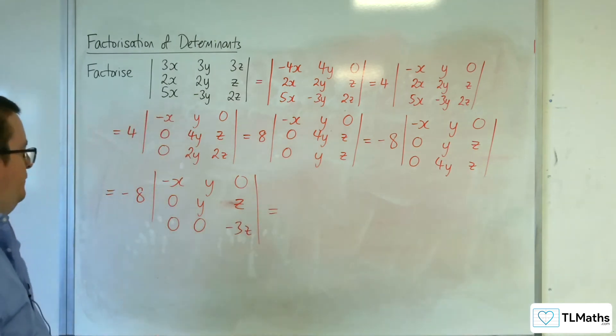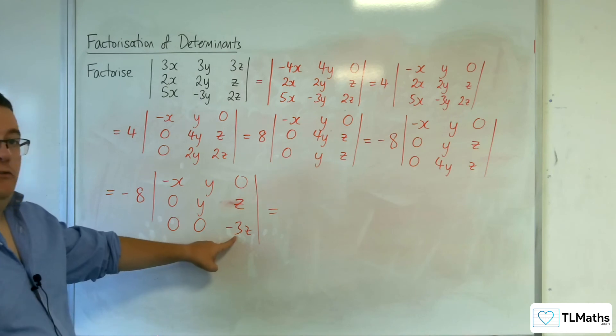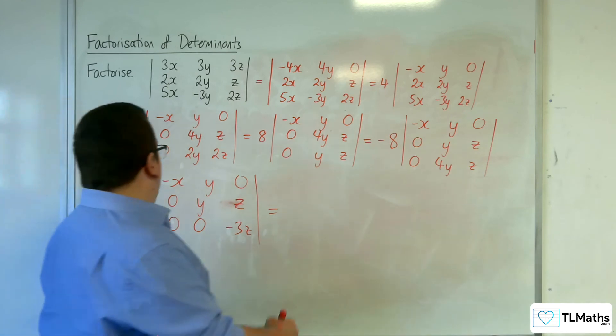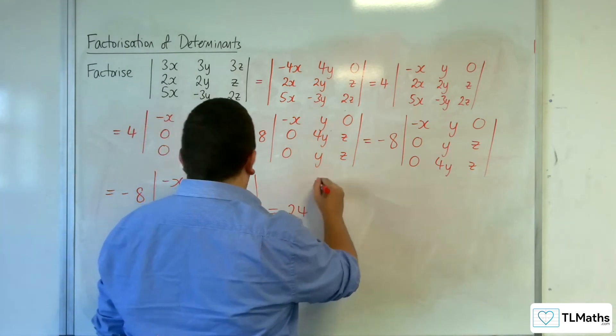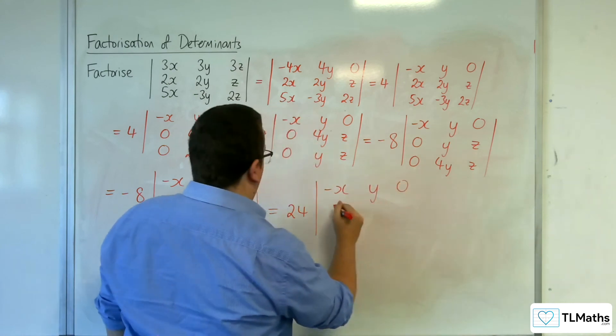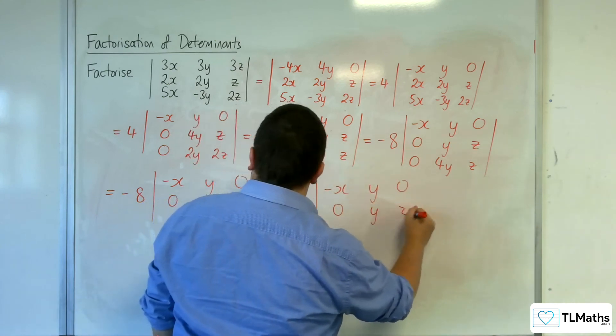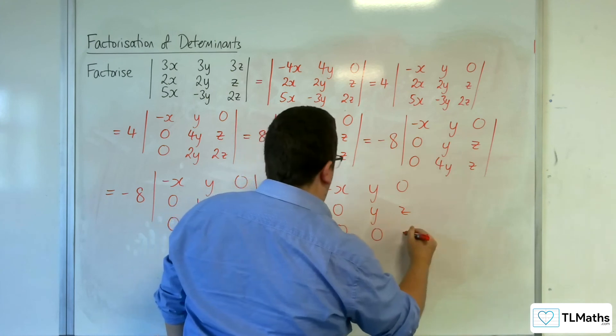Okay. I could then factor out the minus 3 if I wanted to. Okay, so then I'm going to have 24, minus x, y, 0, 0, y, z, 0, 0, z.